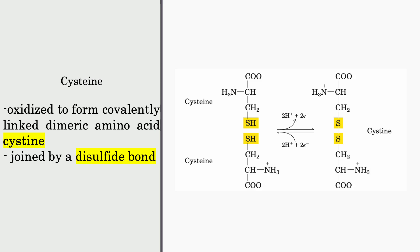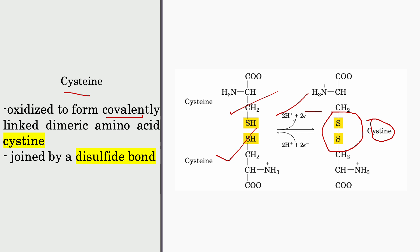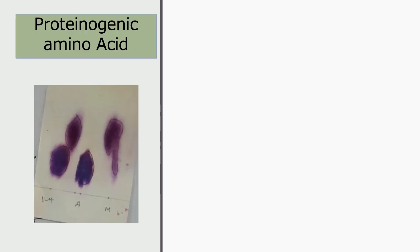Cysteine is normally polar, but when two cysteines are covalently linked they form a dimer called cystine, which is non-polar. The two cysteines bind together by releasing two protons and two electrons to form a disulfide bond. This disulfide bond is crucial for forming the 3D structure of proteins and has many important roles, which I will discuss later in the protein section.